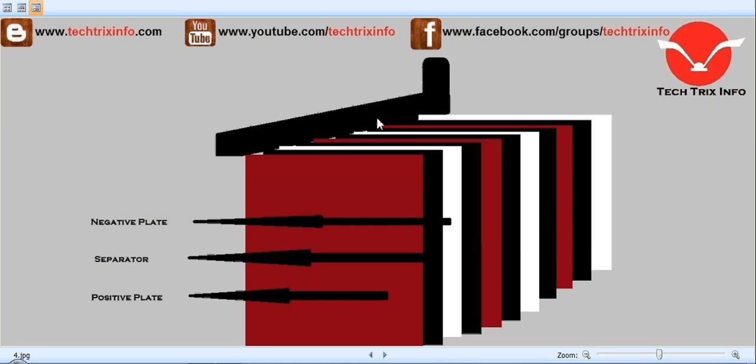At the top we have a strap which is made of lead-antimony, and to this strap these negative plates, the separator, and the positive plates have been welded together. We have a negative plate, then a separator, then a positive plate, again a separator, then a negative plate.